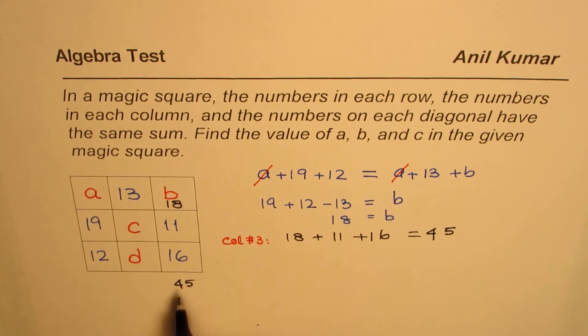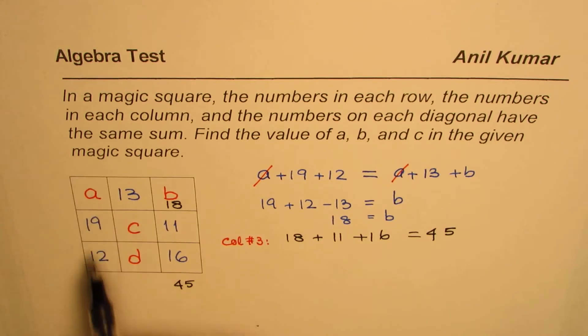Now we can use this 45 as the sum of each and every column, row, or even the diagonals. Now let us find the value of A.